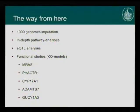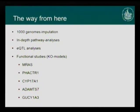So where do we go from here? In Lübeck, our group now focuses on the 1000 Genomes imputation, which increases the number of loci in the analysis to include variants not evaluated so far — typically rare variants — hoping to identify new loci. We also perform in-depth pathway analysis, expression QTLs to identify disease pathways, and we have knockout mouse models developed for several genes from the first wave of GWAS.